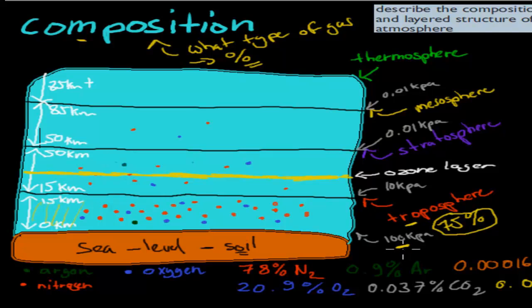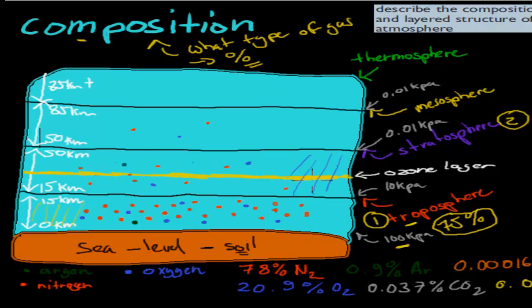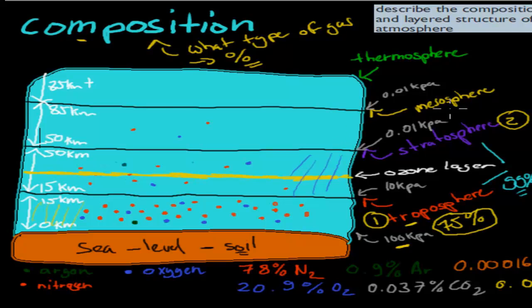The troposphere has the highest pressure at about 100 kilopascals, and it ends at about 15 kilometers. After that, the next layer starts — the stratosphere. The stratosphere goes from about 15 kilometers up to roughly 50 kilometers. There are fewer molecules in the stratosphere than in the troposphere. But together, the troposphere and the stratosphere have roughly 99% of all molecules. The troposphere by itself has about 75%, so the rest is in the mesosphere and thermosphere, which have very little in terms of gases.